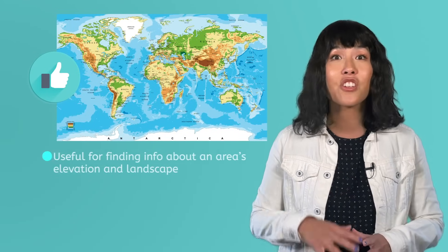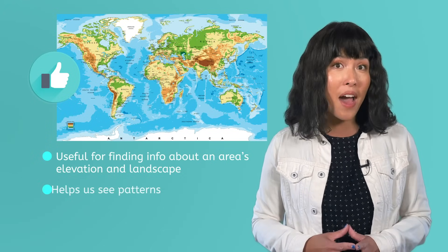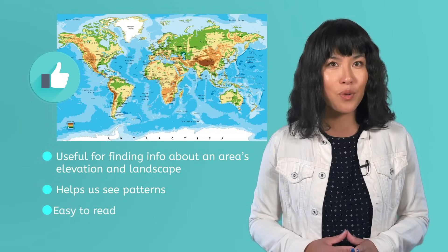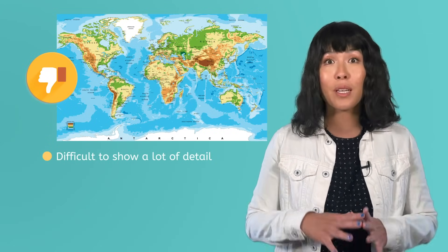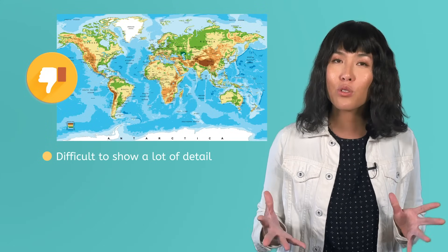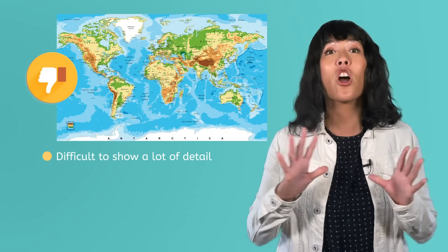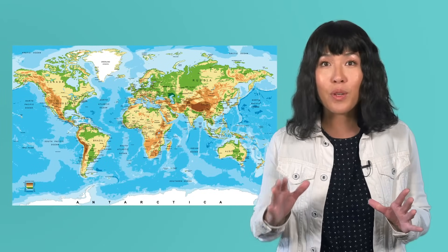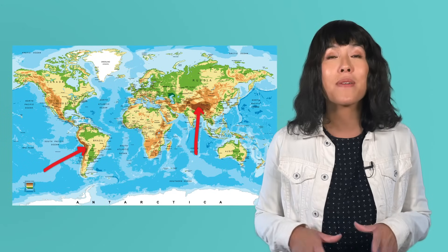Relief maps are useful for finding general information about the elevation and length of the landscape of an area, or for noticing patterns about different landscapes around the world. They're also pretty intuitive and easy to read, even if you don't know a ton about geography. However, since relief maps tend to use colors for pretty broad ranges of elevations, it can be difficult to use them to answer detailed questions, especially on a map of a large area. For example, there is over a mile difference in elevation between the highest points of the Andes and the Himalayas, but this relief map shows them in the same color.